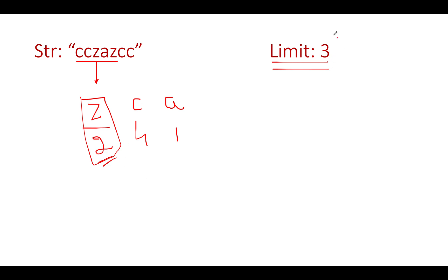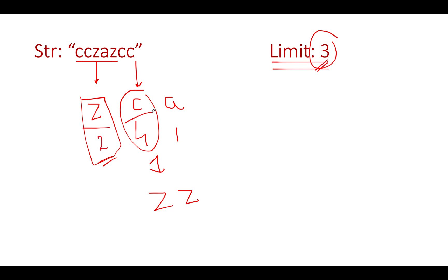Now what we will do - we will pull out the lexicographically largest character, which is Z, with a frequency of two. It's within the limit of the maximum repeat character which is three, so we will simply add Z two times. Next, the character C occurs four times. Four is greater than the limit of three, so we can't consume it fully. Therefore we will add C three times. The updated frequency of C gets reduced by three, updated to one. Z's frequency gets updated to zero since we consumed both Z's.